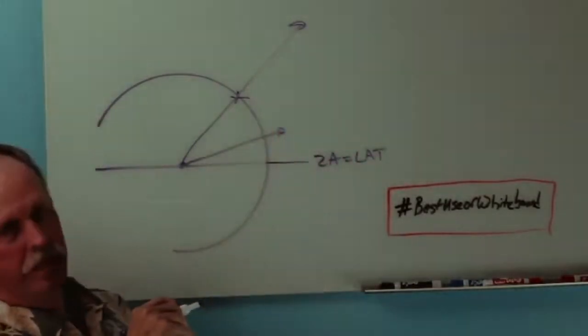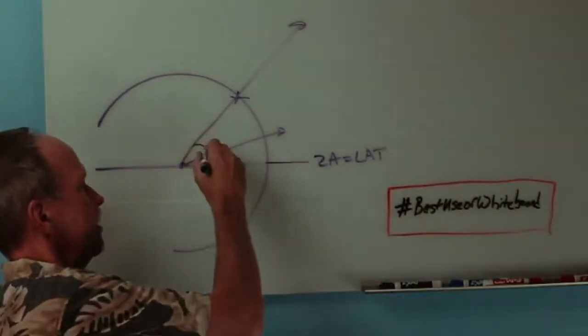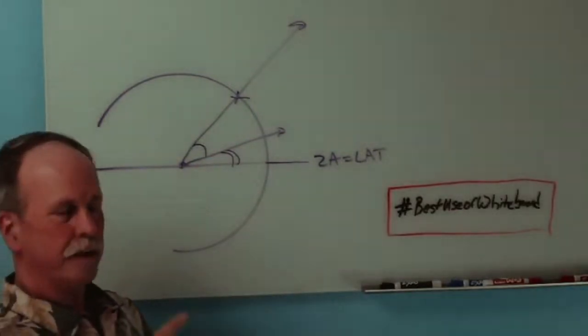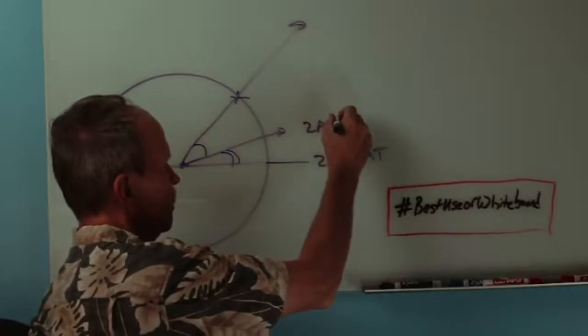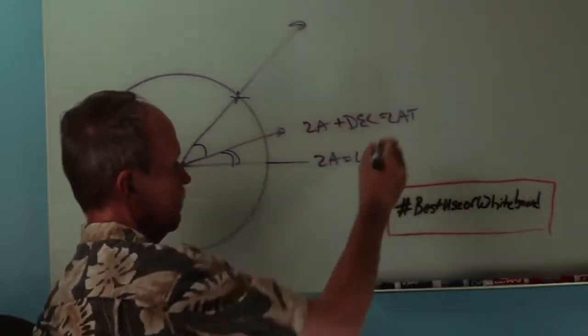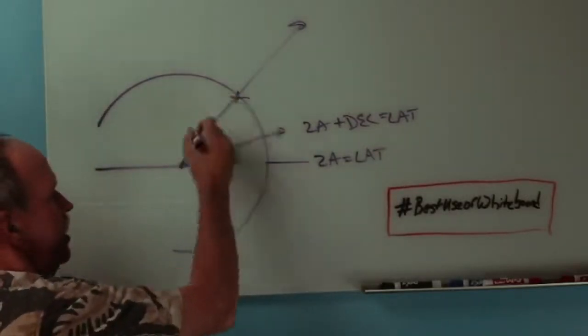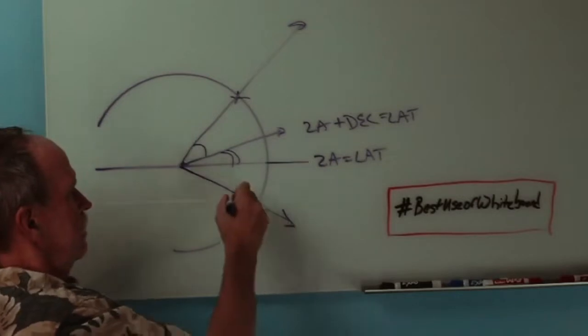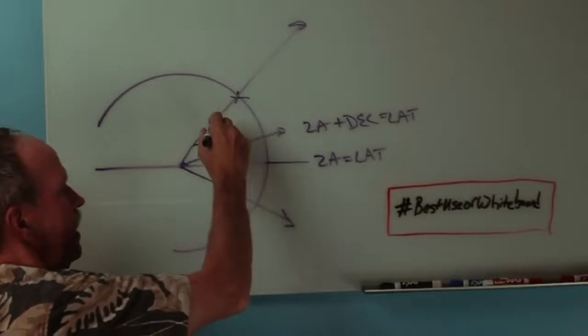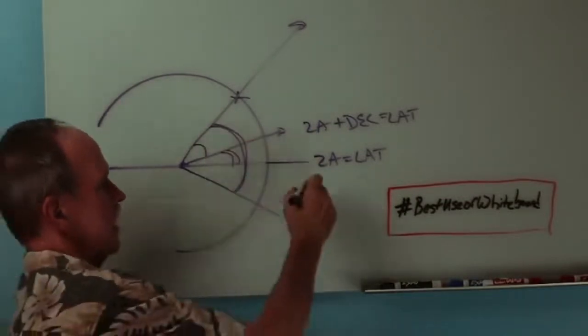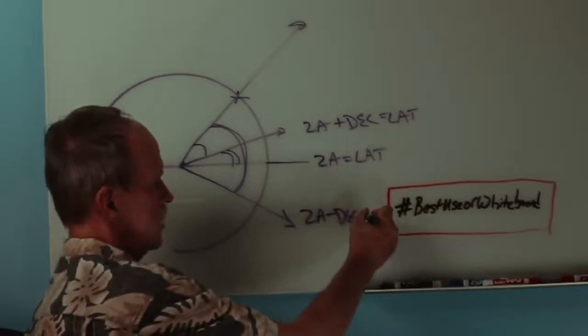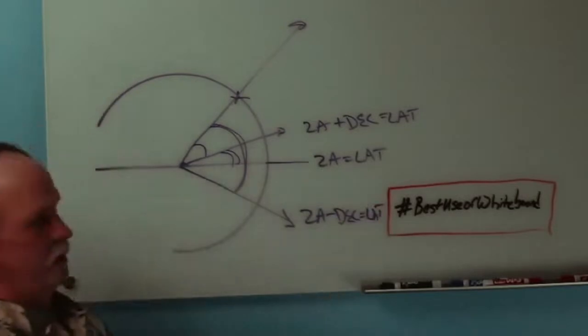If the Sun is at the equator, zenith angle equals latitude. If the Sun is closer to us than the equator, we're going to read this angle right here. We have to add to it the declination angle to get our latitude. So it would be zenith angle plus declination equals latitude. If the zenith angle was here and the Sun was down here, we would take, we're going to measure this entire angle with our sextant. So we have to take zenith angle minus declination equals latitude. Does that make some sense?